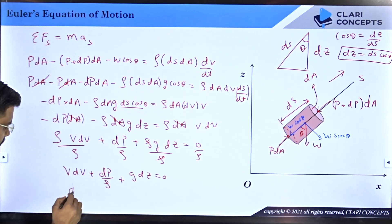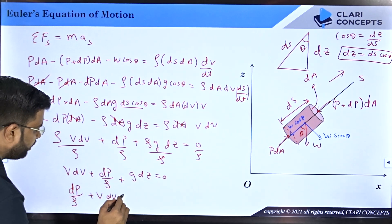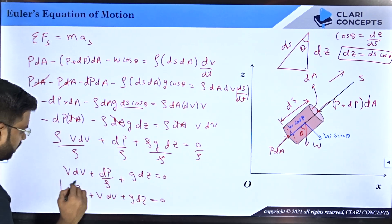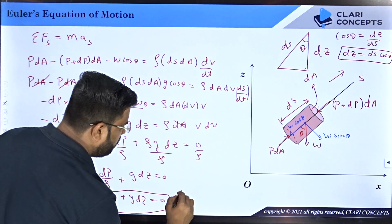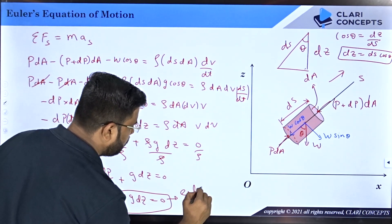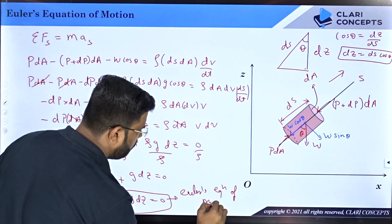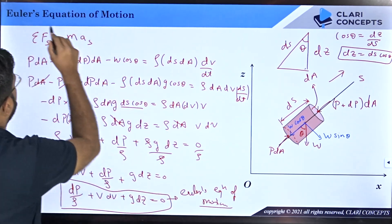You will get V dV plus dP by rho plus g dZ equals zero. Let me rearrange the terms. I'll take pressure terms in the front, then V dV velocity terms, and then g dZ potential terms. This is the Euler's equation of motion.